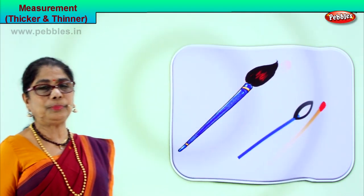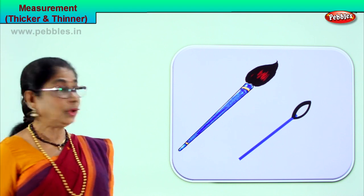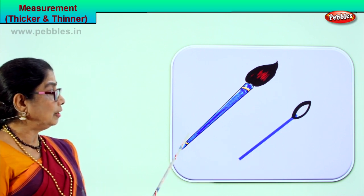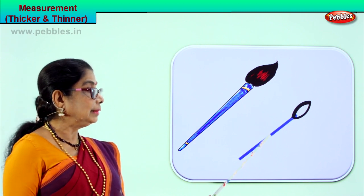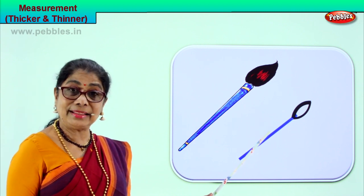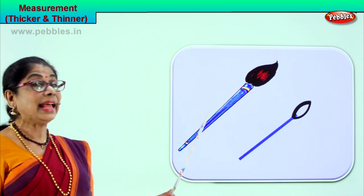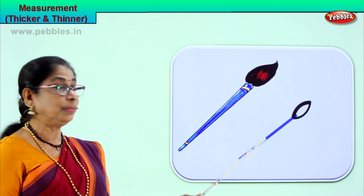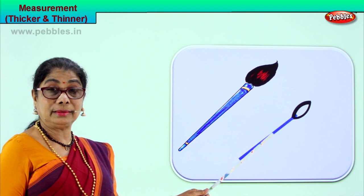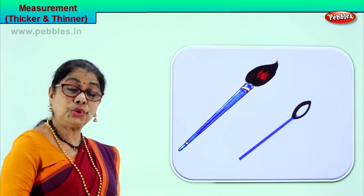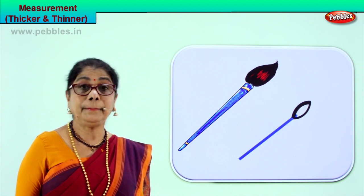Look at this next picture. You have a paintbrush — a thin paintbrush and a thick paintbrush. This brush is thinner than this brush. Or, this brush is thicker than this brush. I hope now you are learning what is thicker and thinner — the two measurements. I am sure you have understood. Let's get on to another picture.